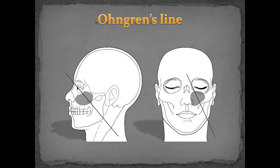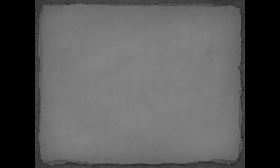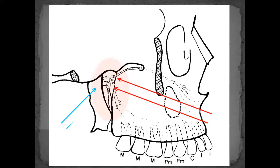For surgical approaches — very briefly: Ohngren's line is a line from the medial canthus to the angle of the mandible. We don't use it nowadays, but it still appears on boards. Tumors superior to this line are more aggressive because of proximity to the orbit, skull base, and involved nerves. The pterygopalatine fossa sits in this zone. Ohngren's line was described decades ago based on plain lateral X-rays, not on CT or endoscopic anatomy.